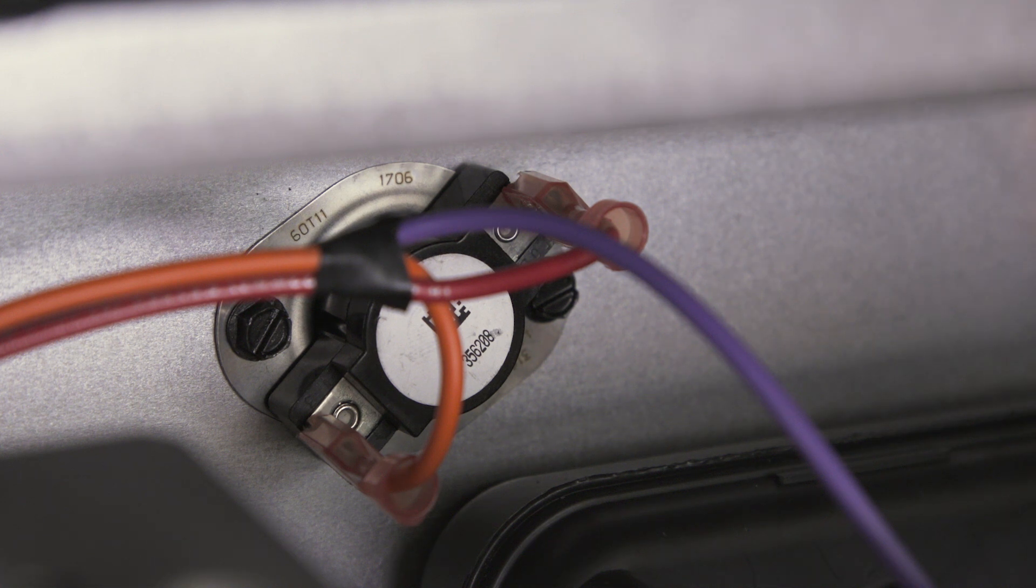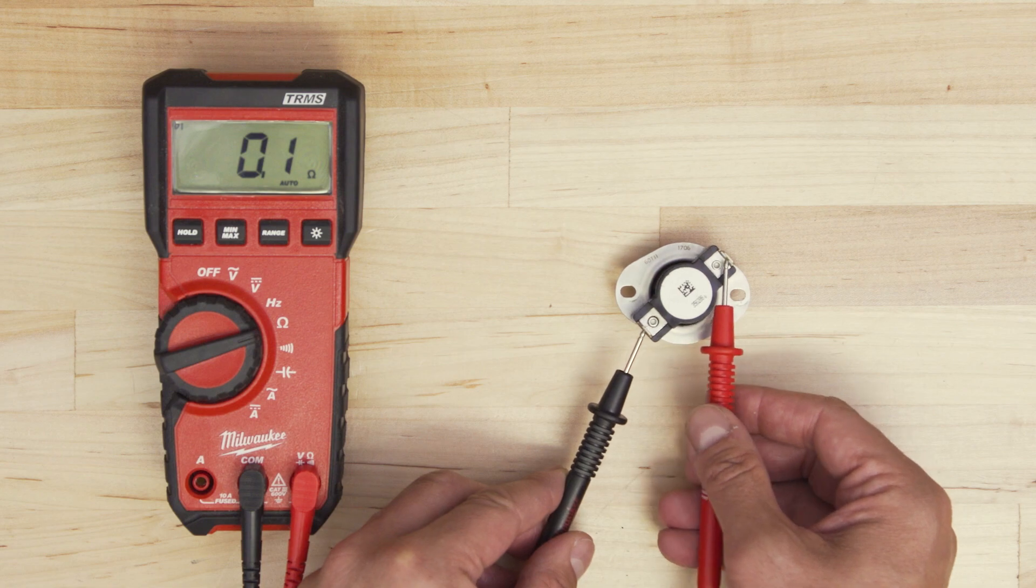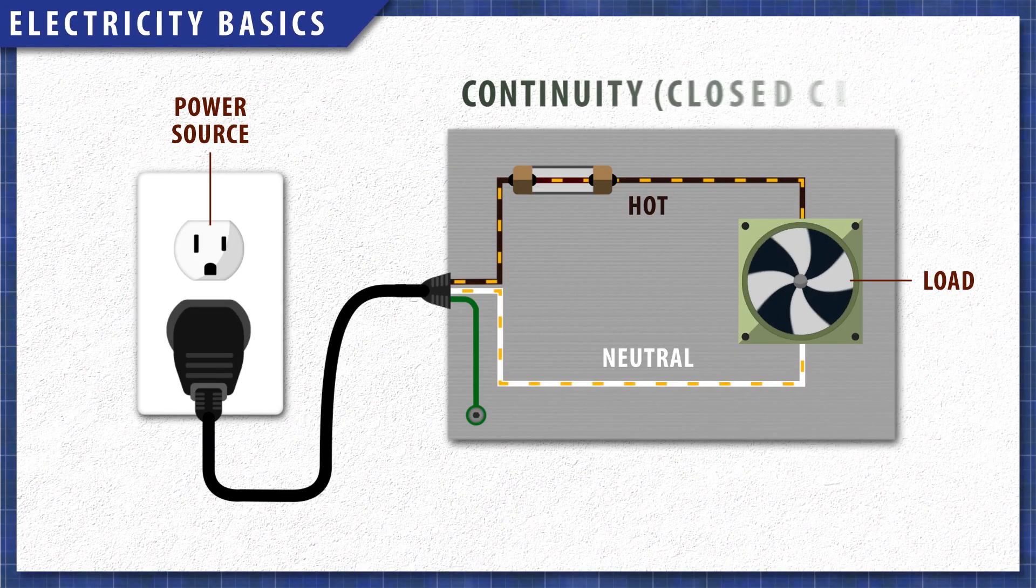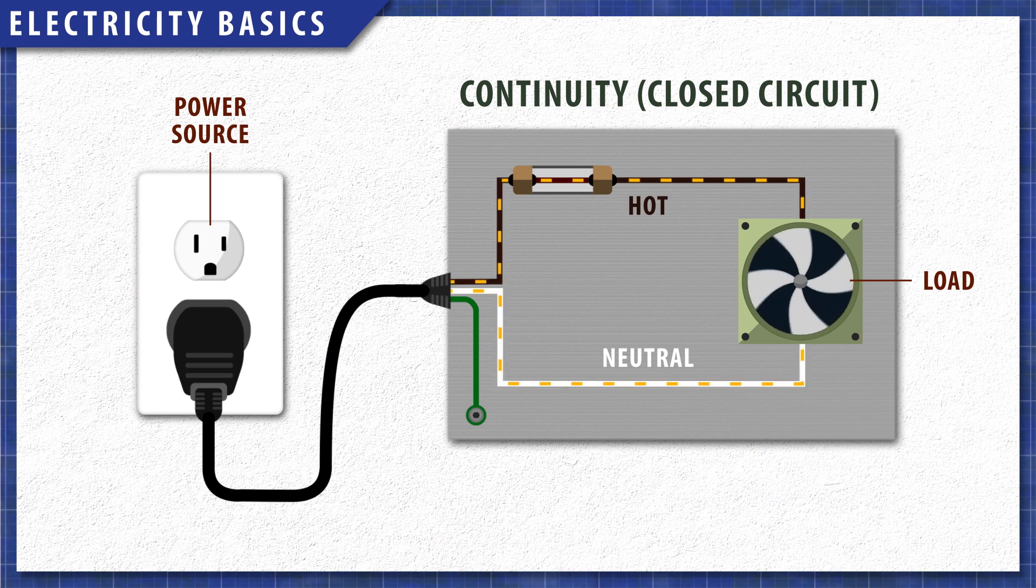Appliances are made up of some basic circuits and components. Having a good understanding of each component can help you troubleshoot and fix most problems. All circuits need a continuous path for electricity to flow through. This is continuity, or a closed circuit.